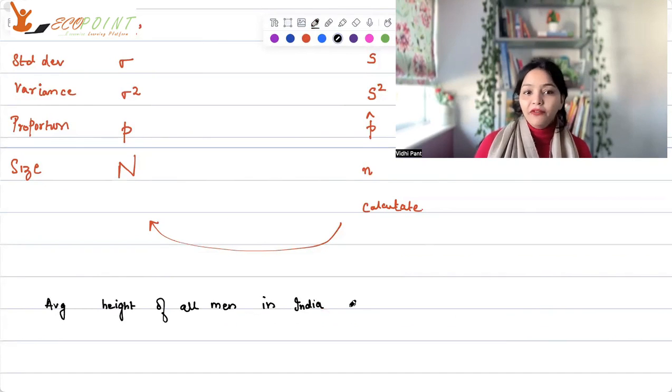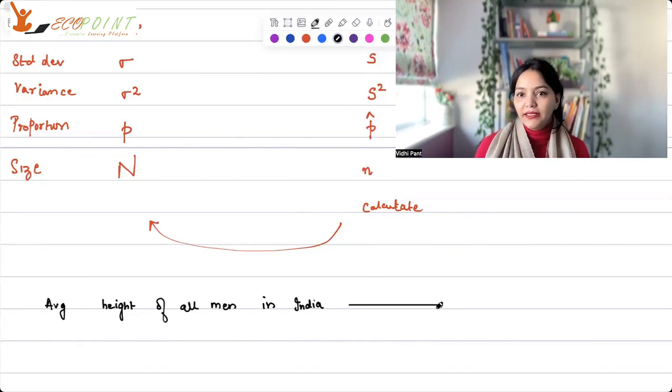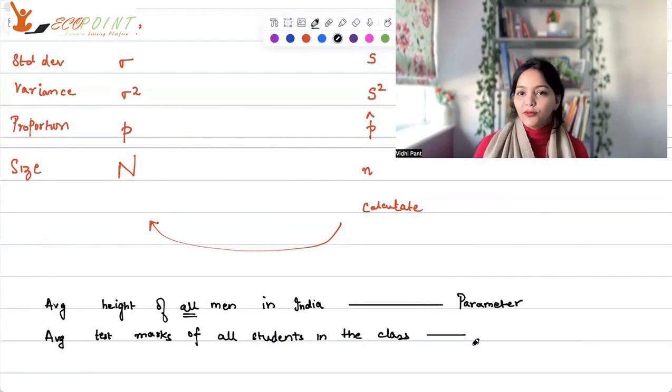Let's see if you understood this. Average height of all men in India. If I talk about average height of all men in India, is this a population parameter or a sample statistic? Well, that's a parameter because I'm taking all men in India.